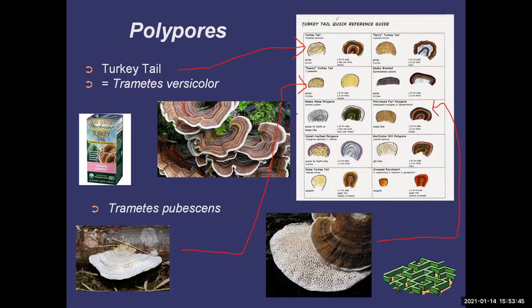They've also done a similar study in men with prostate cancer, and in dogs with hemangiosarcoma — cancer of the spleen. They found that dogs given turkey tail lived longer than those that didn't. Hemangiosarcoma is a really bad tumor in dogs, so it's kind of nice to see a substance found in nature with no side effects having scientific benefit. A lot of antibiotics originally came from mold — penicillin is from bread mold — so it's not surprising to find medicinal properties in other fungi.